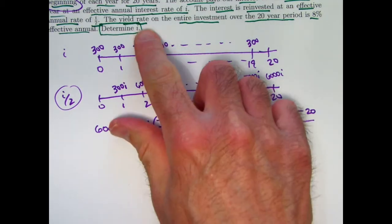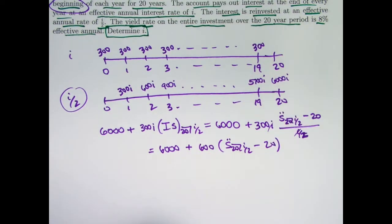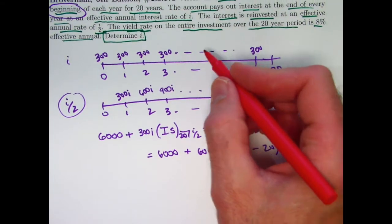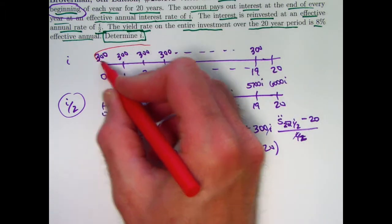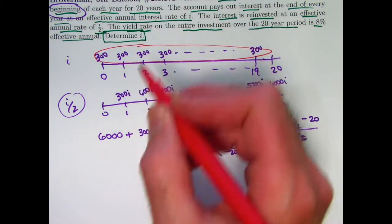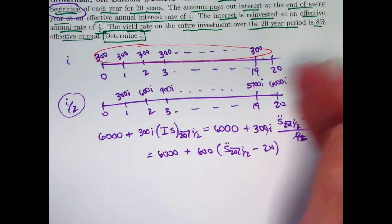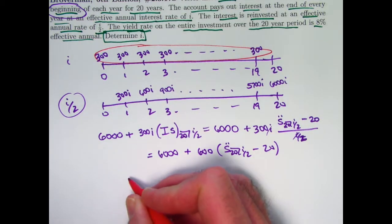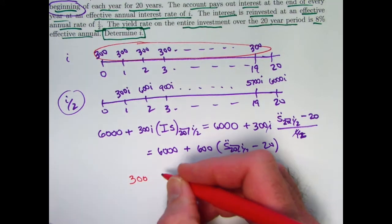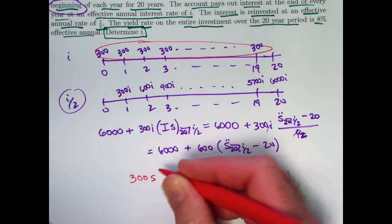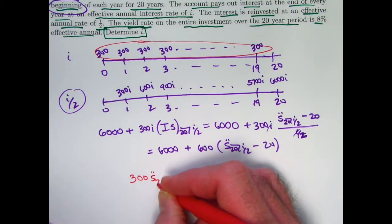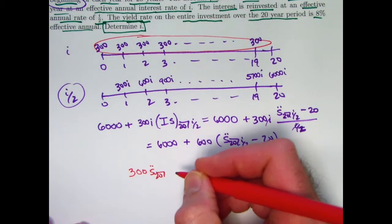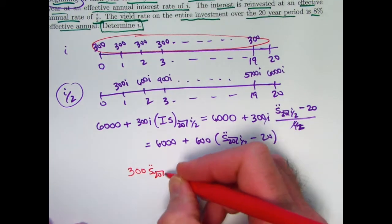What does this have to equal? Now you need to bring the yield rate into account. The yield rate of 8% comes from thinking about the yield you're getting on your investment, which really was this annuity due of level payments of 300 at the beginning of each year. So the future value can also be written as 300 times s double dot sub 20 corresponding to the yield rate, 0.08.